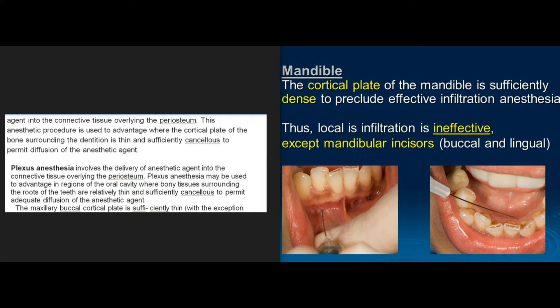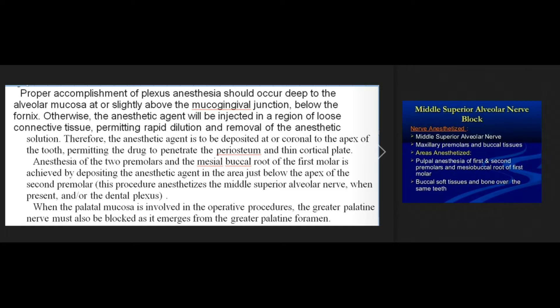Plexus anesthesia is the mode of anesthetic administration used for most anesthesia sites in the maxillary arch. The maxillary teeth are supplied by the anterior superior, middle superior, and posterior superior alveolar nerves. The anterior superior and middle superior alveolar nerves are branches of the infraorbital nerve, whereas the posterior superior alveolar nerve is a branch of the trunk of the maxillary division of the trigeminal nerve. Proper accomplishment of plexus anesthesia should occur deep to the alveolar mucosa at or slightly above the mucogingival junction, below the fornix. The anesthetic agent is to be deposited at or coronal to the apex of the tooth, permitting the drug to penetrate the periosteum and thin cortical plate.